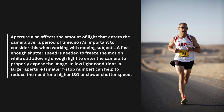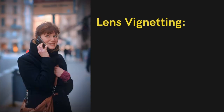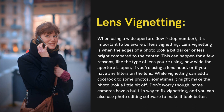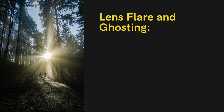When using a wide aperture (low f-stop number), it's important to be aware of lens vignetting — when the edges of a photo look darker or less bright compared to the center. This can happen due to the type of lens, how wide the aperture is open, whether you're using a lens hood, or if you have filters on the lens. While vignetting can add a cool look to some photos, sometimes it might make the photo look a little off. Some cameras have a built-in way to fix vignetting, and you can also use photo editing software to correct it.